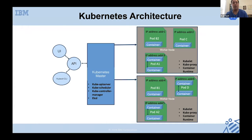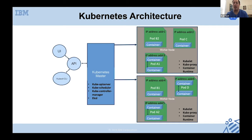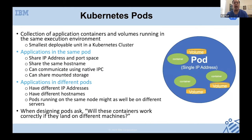Looking at the Kubernetes architecture: it allows you to run across a cluster. You have a master node you interact with via API, user interface, or command line — that's who you're telling to get your containers up and running. You have worker nodes in the cluster where your containers run. Interestingly, the smallest unit you provision and manage is not a container — they created another abstraction called a pod.